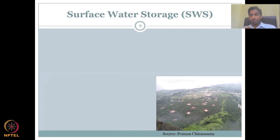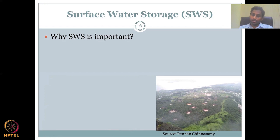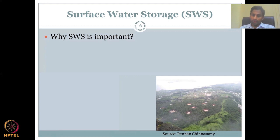Let's look at surface water storage — in short, SWS. Why is SWS important? It is important because all rainfall cannot be caught and used at once. The rate at which a plant takes up water is much slower than the rainfall, so if a plant cannot catch the rainfall within a period, the excess rainfall converts to runoff and is lost from the system.